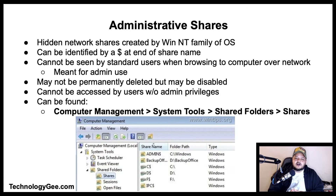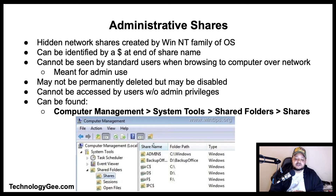Let's talk about administrative share. An administrative share is a hidden network share created by the Windows NT family of operating systems, identifiable by a dollar sign at the end of the share name. It allows system administrators to have remote access to every disk volume on a network-connected system. These shares cannot be seen by standard users when browsing the computer over the network — they are meant for admin use only. These shares may not be permanently deleted but may be disabled. Admin shares cannot be accessed by users without admin privileges. All shared folders including admin shares can be found by navigating to Computer Management > System Tools > Shared Files and Shares.